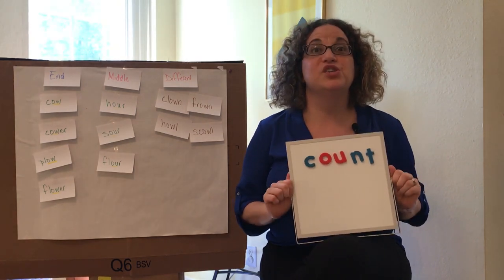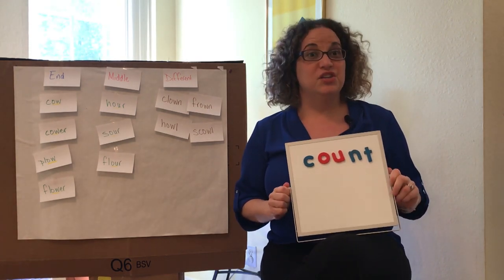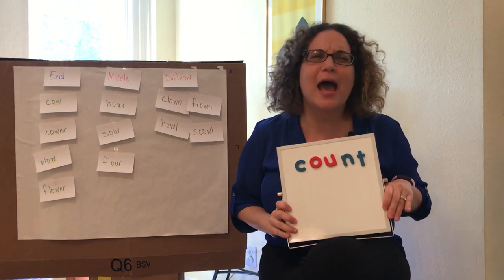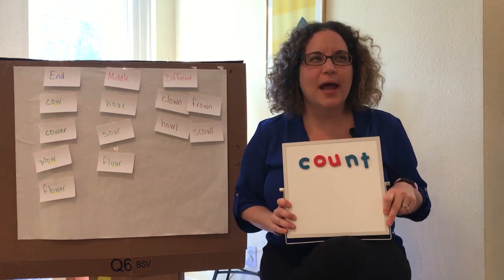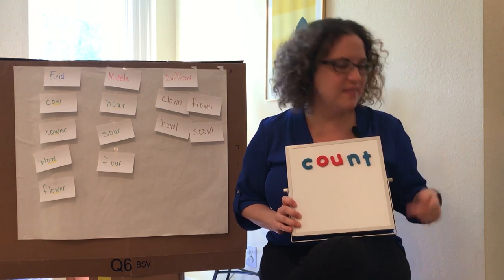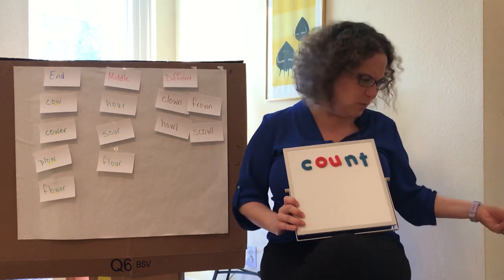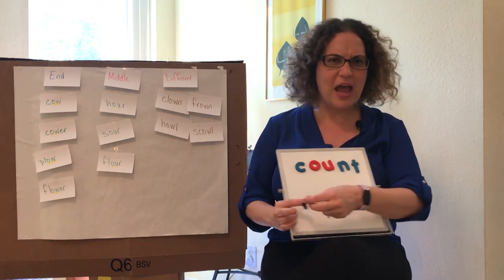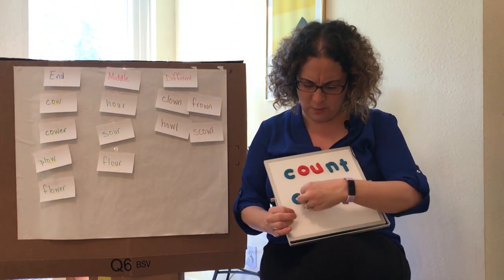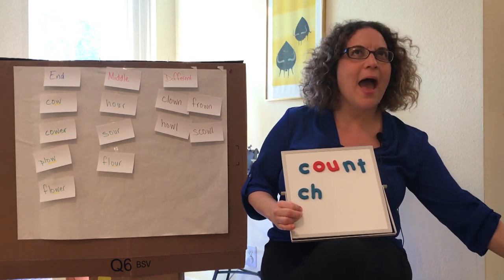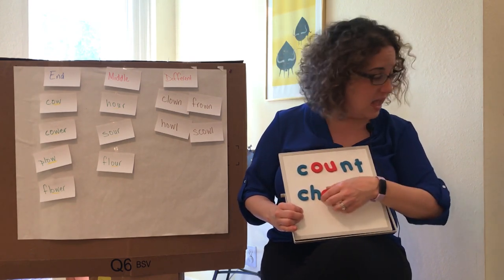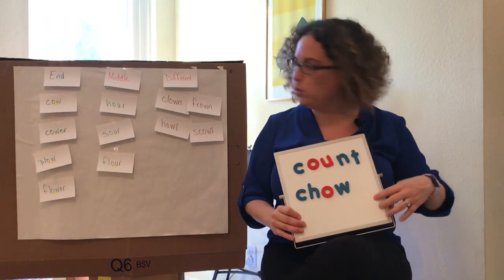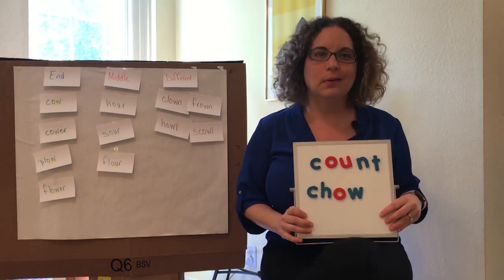Let's write the word 'chow.' I like to chow down on pizza at lunch because I like to eat it really fast. Say 'chow' with me — where do you hear that ow? It's at the end. So how are we going to spell 'chow'? The C-H digraph, then OW at the end — if it's at the end, I'm going to try O-W. Chow, like cow.